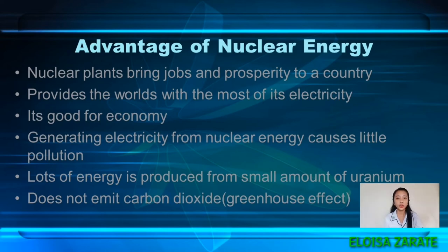Next, lots of energy is produced from a small amount of uranium. Uranium is a heavy metal that has been used as an abundant source of concentrated energy for over 60 years. Through chain reaction, a very large amount of heat is produced from a relatively small amount of uranium.